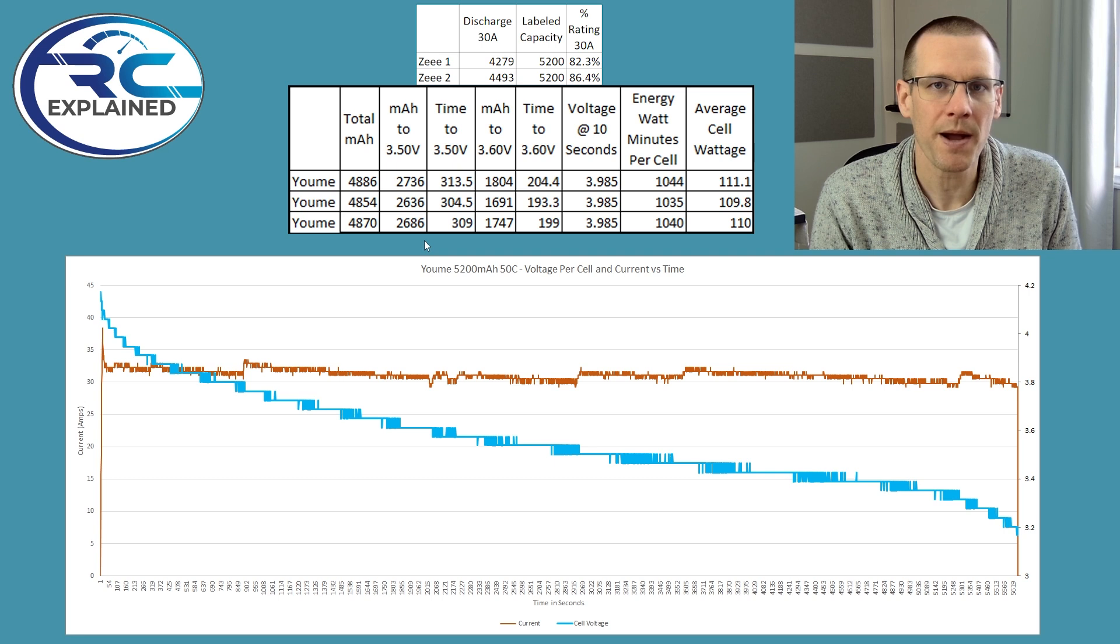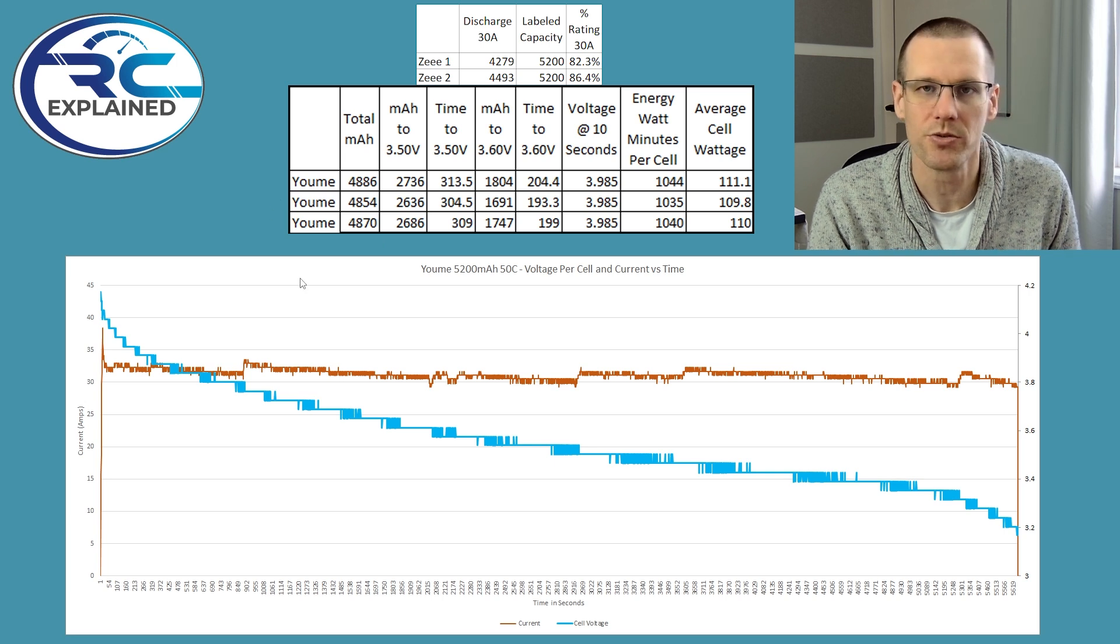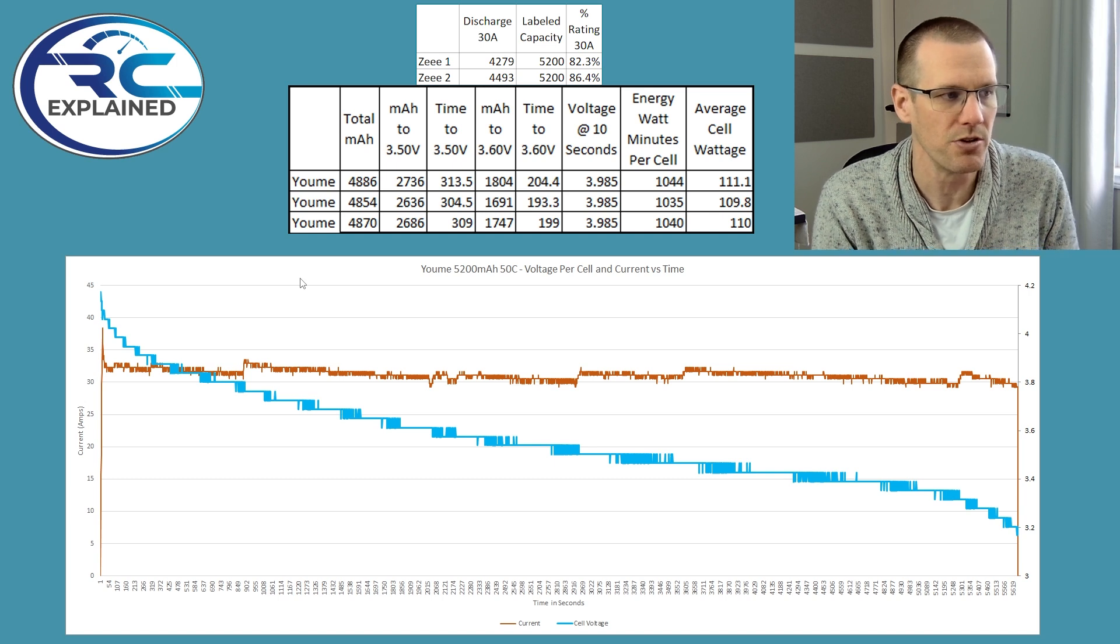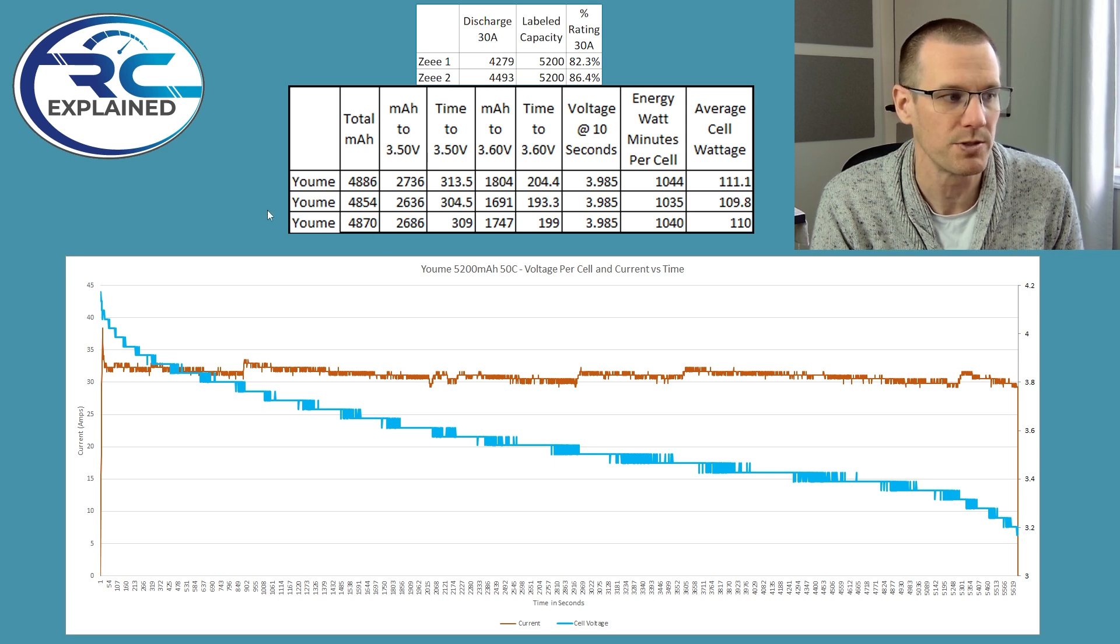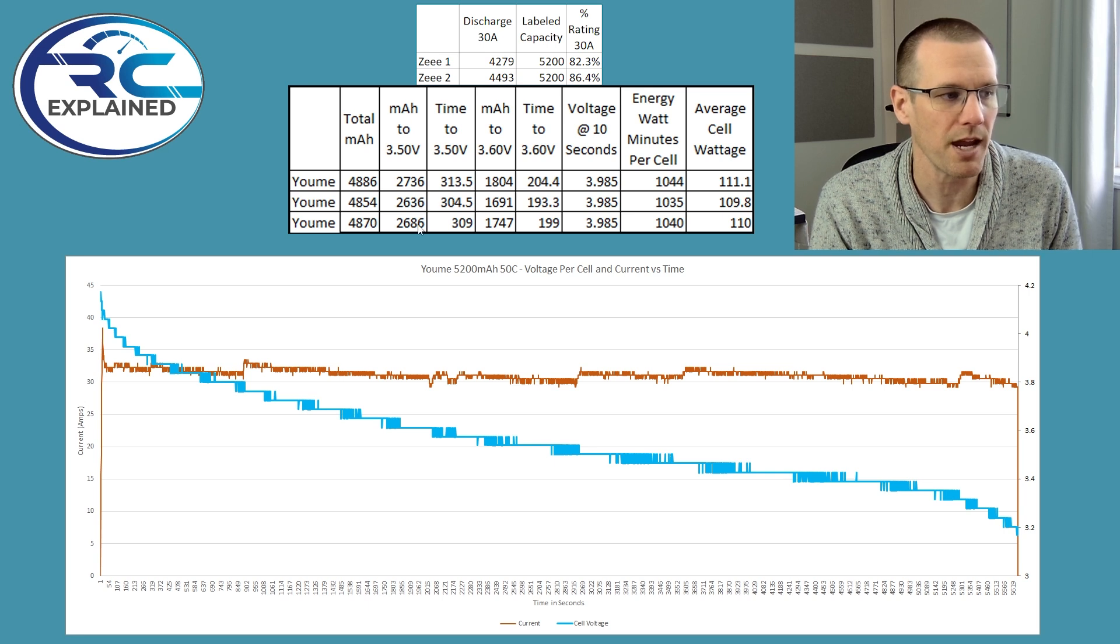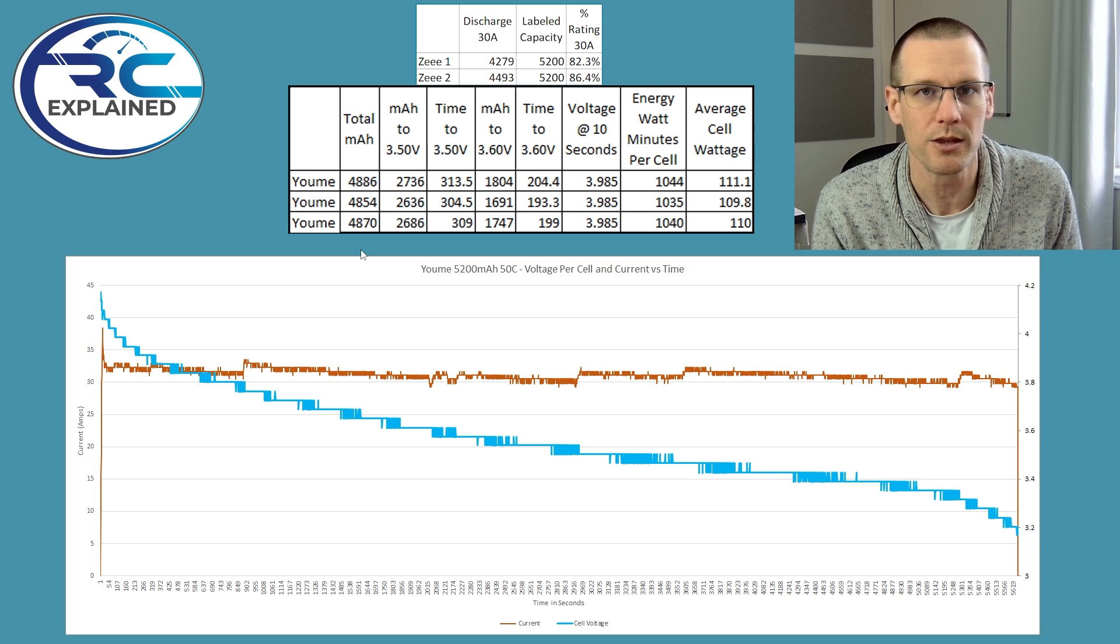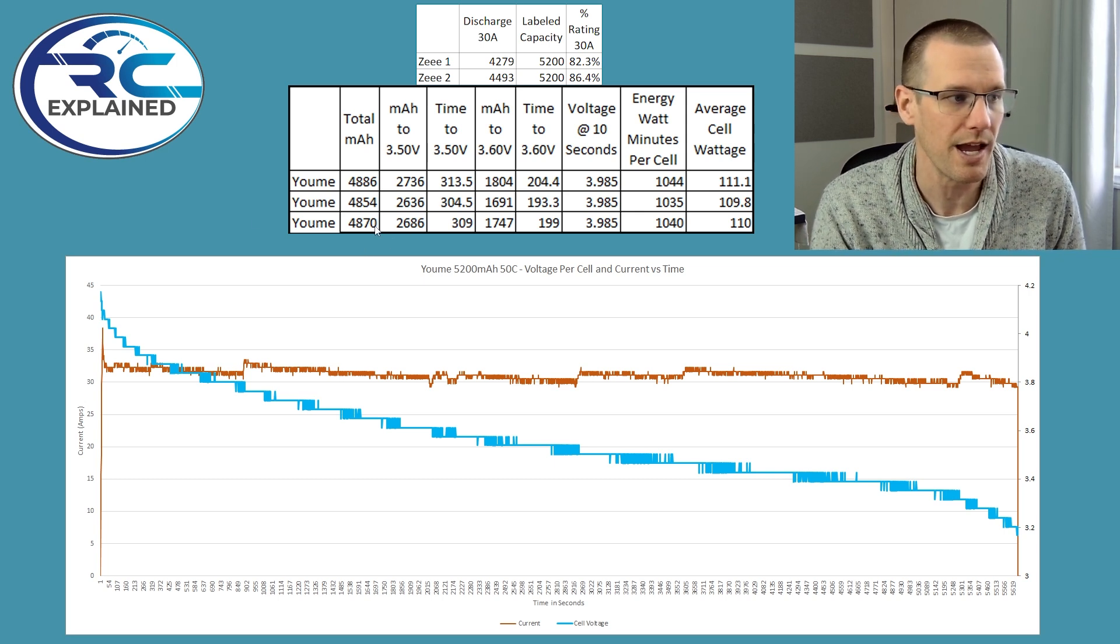When we look at how much capacity we were able to get out of the Yumi battery pack, it is about 4870 on average between battery one and battery two. And that is pretty decent considering the Z battery pack did not achieve this kind of value. When we're looking at the milliamp hour to 3.5 volts, this surely shows us that it should be much higher, there should be very small or negligible difference between the total capacity and the milliamp hour to 3.50 volts. But because this performs more like a lithium ion battery pack, it actually has a lot more voltage sag. And this is what we see as a result.